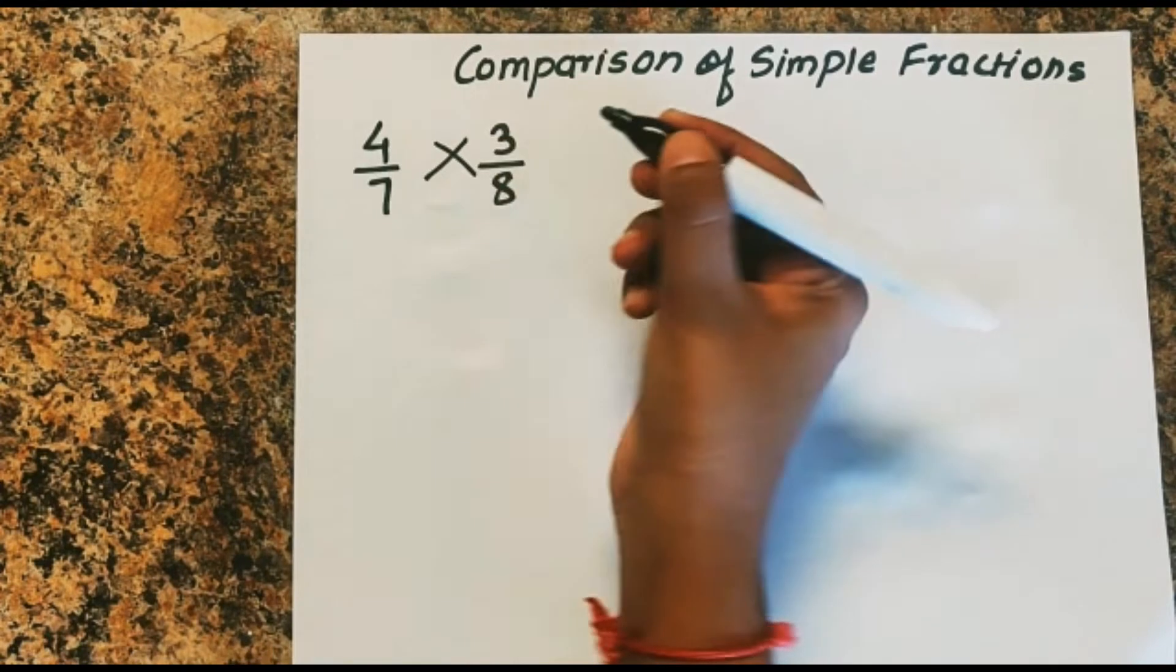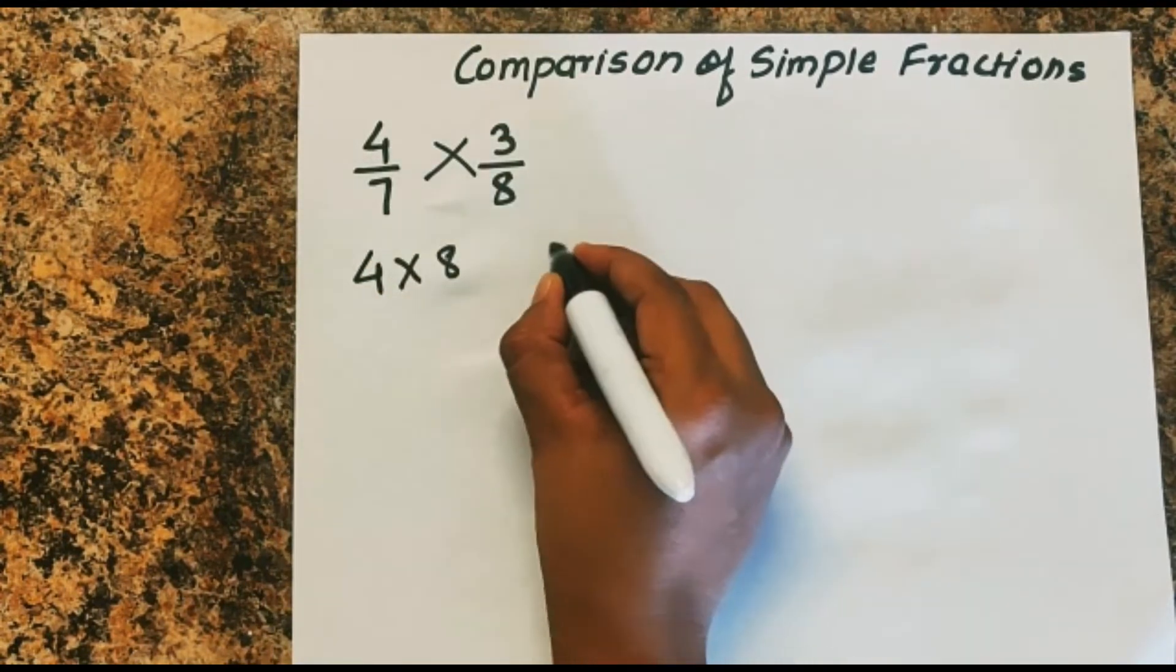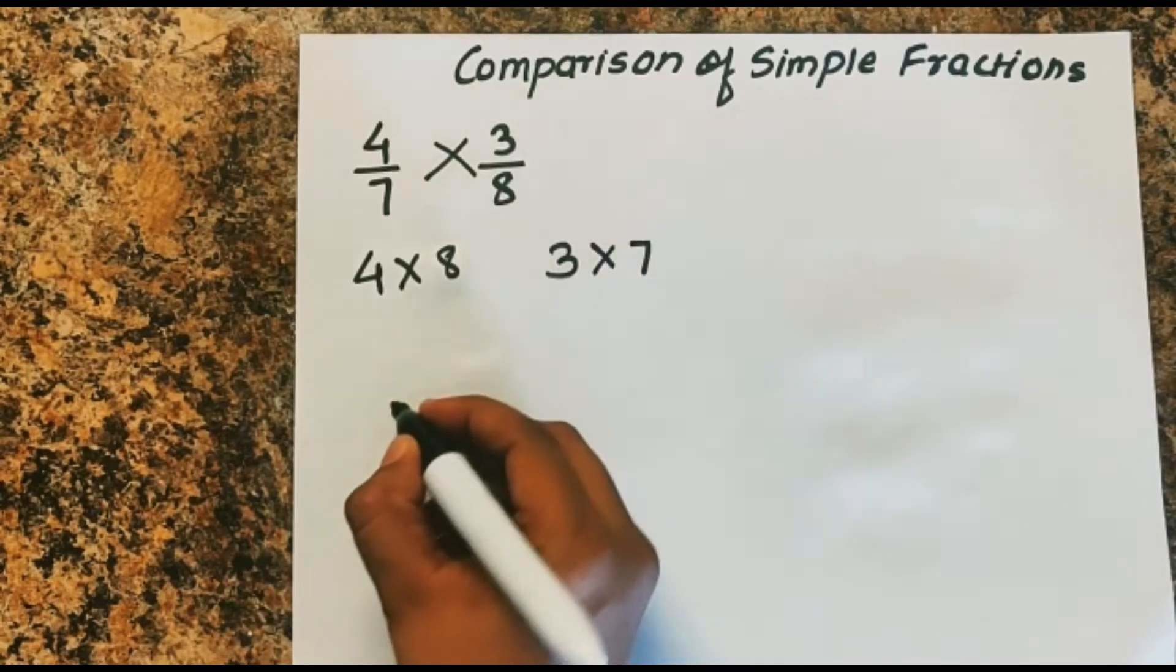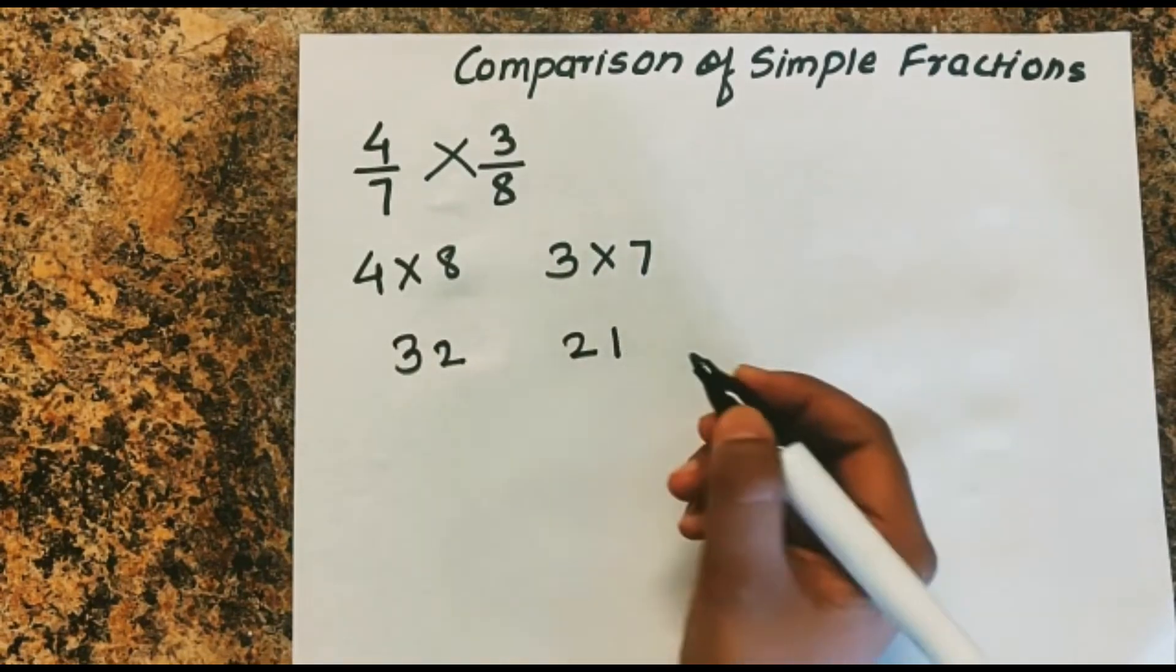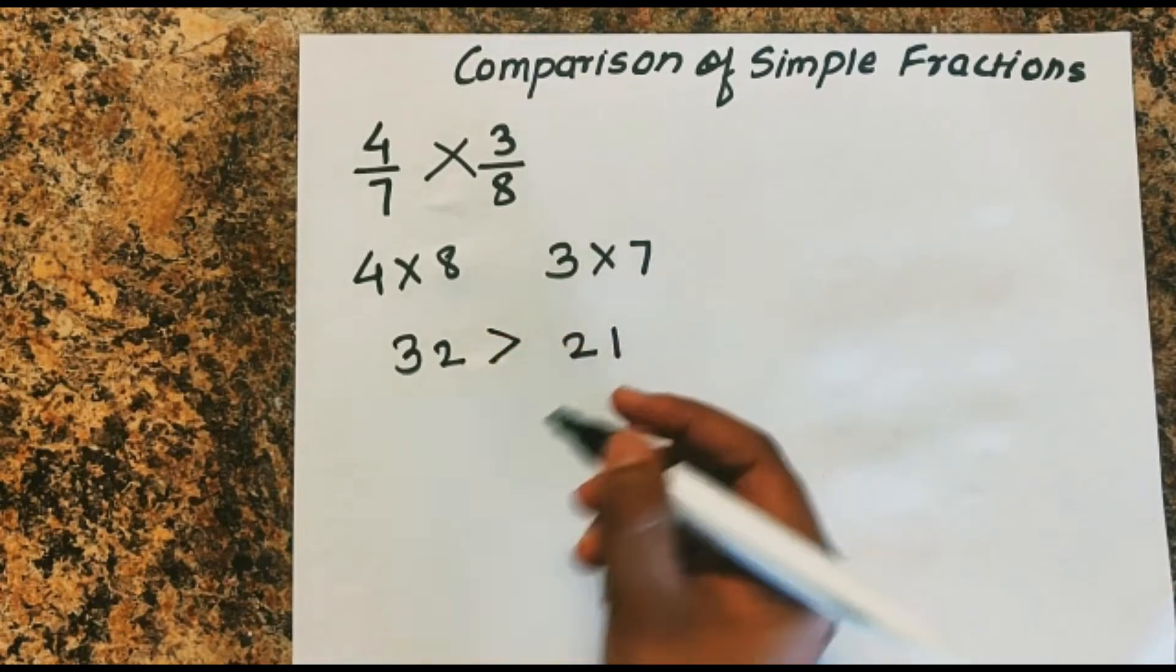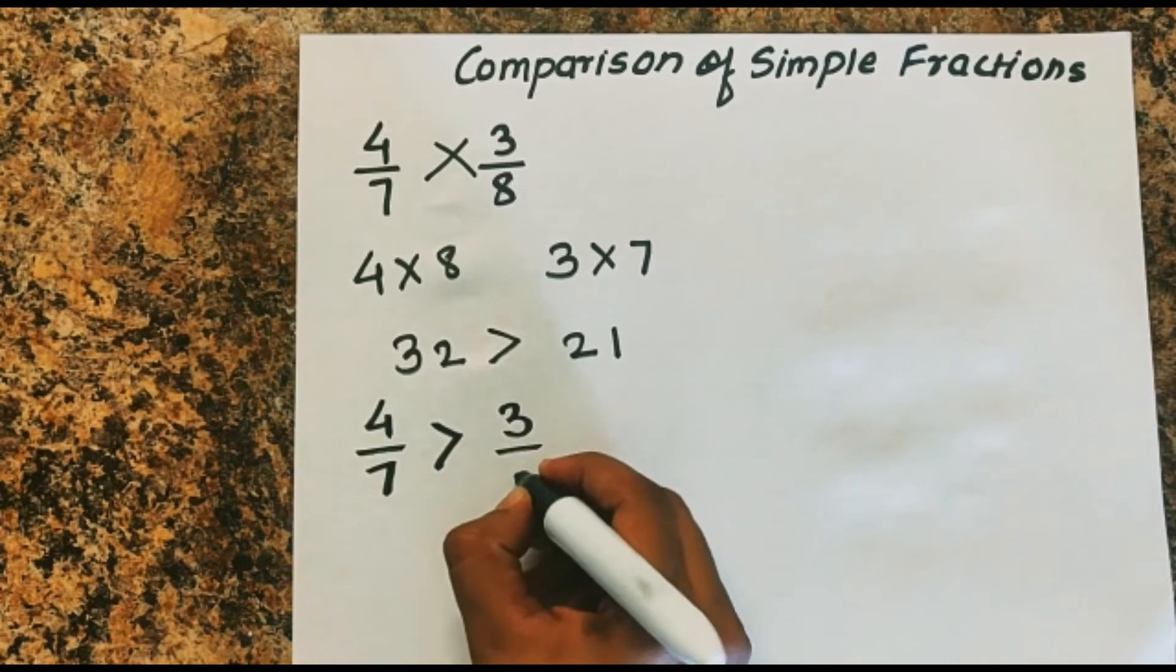What you can do is just a cross multiplication: 4 into 8 and 3 into 7. This is 32 and this is 21. So this is greater. So 4 upon 7 is greater than 3 upon 8.